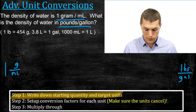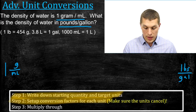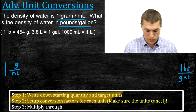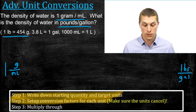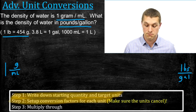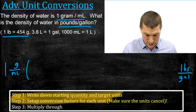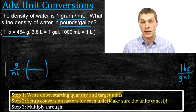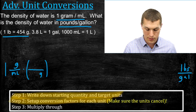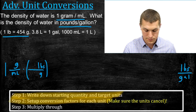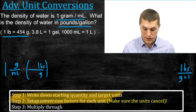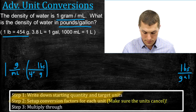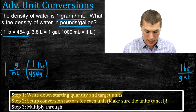Step two says set up conversion factors for each unit. You can do these unit conversions in whatever order you want. First we'll take care of the grams, converting to pounds. We write grams on the bottom and pounds on top of the conversion factor. Our equality says 454 grams for every one pound, so we write 454 on the bottom and one on top. That gets rid of our grams — they cancel out.